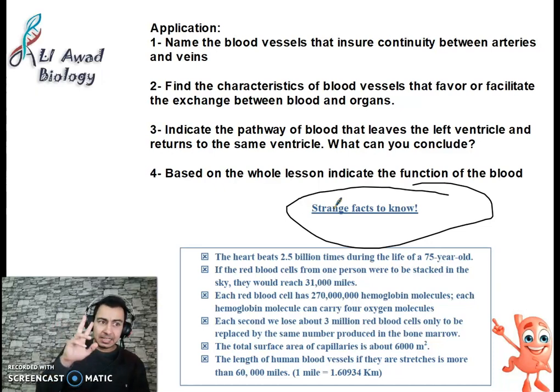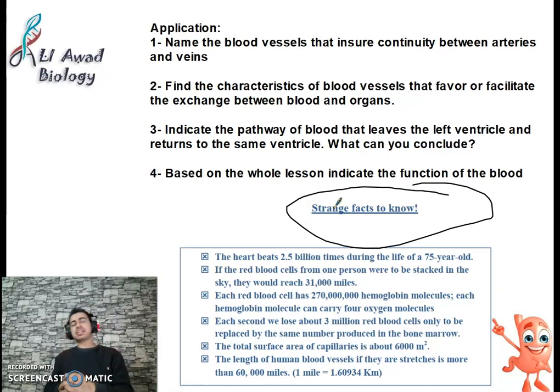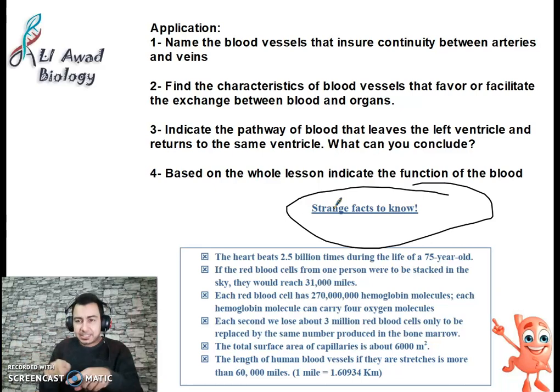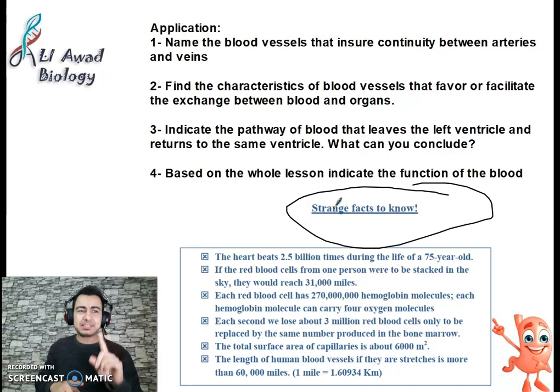The total surface area of capillaries is about 6,000 square meters. Our blood vessel area is like 6,000 square meters - a house is maybe 200 square meters. The length of human blood vessels, if they are stretched, is more than 60,000 miles, about 90,000 kilometers. If you connect all the blood vessels in a person, they would circle the Earth.